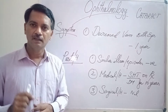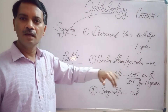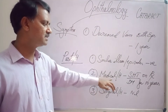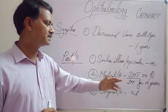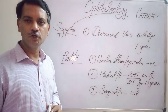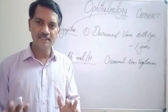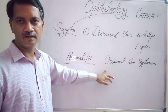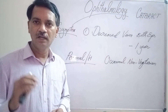Under the past history, the patient told there was no similar type of illness or episodes before in her life. The medical history revealed she is a known systemic hypertensive patient and a known diabetes mellitus patient on treatment for 10 years. Under surgical history, she has not undergone any surgery. She is an occasional non-vegetarian, not a smoker, does not take tobacco or alcohol.